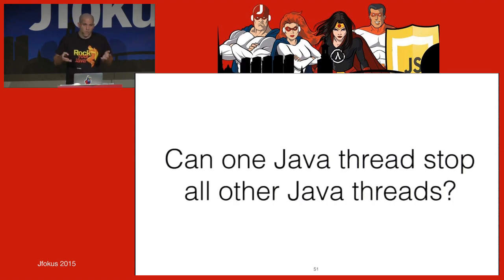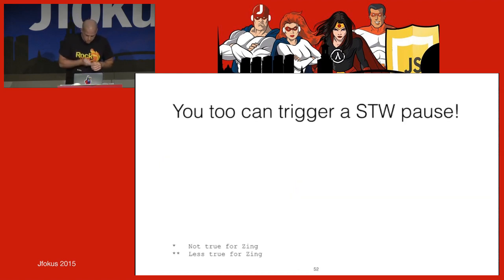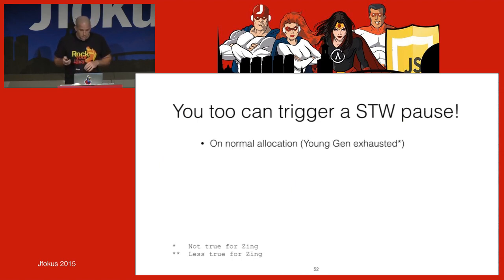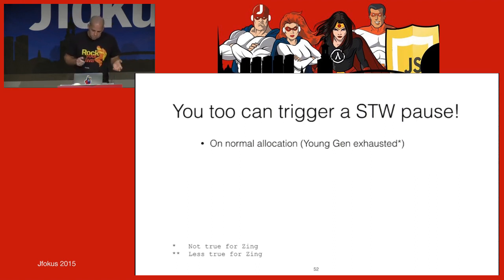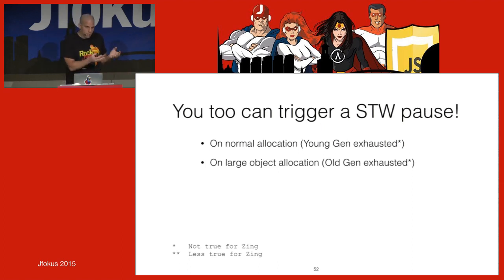Can you stop other Java threads without calling Thread.suspend or Thread.stop? Yes — you can trigger a stop-the-world pause yourself. If you allocate an object it might trigger a young GC; there's no 'try-allocate-but-if-it-triggers-GC-don't.' Zing suffers less because we have a concurrent young-gen GC, and we don't have the old-gen-exhaustion problem where a large object that doesn't fit anywhere forces a full collection.